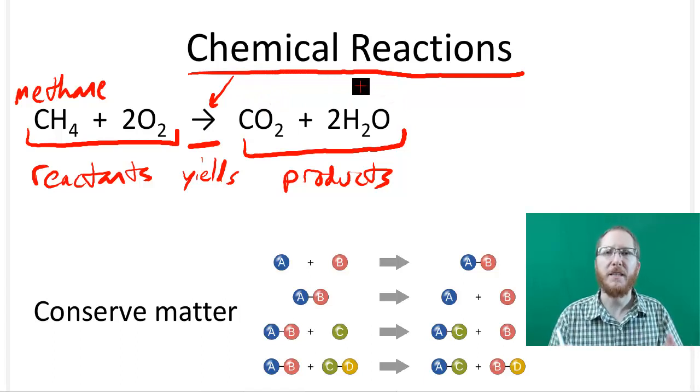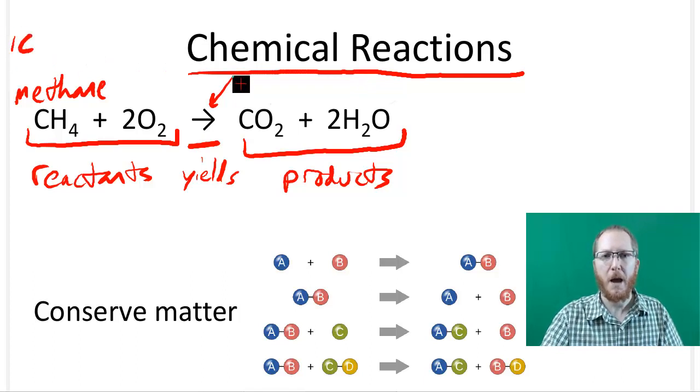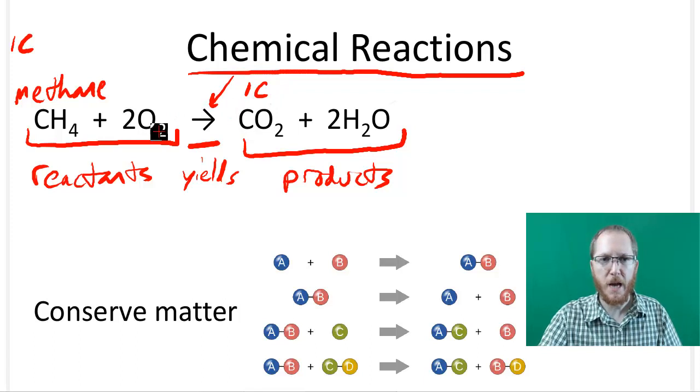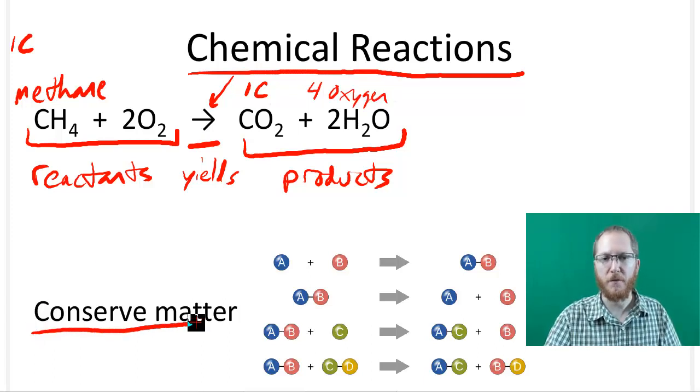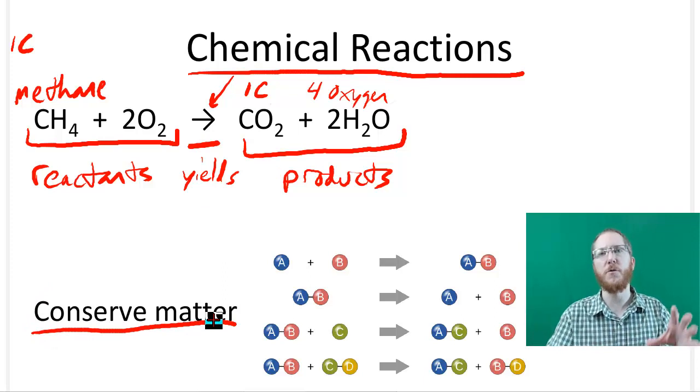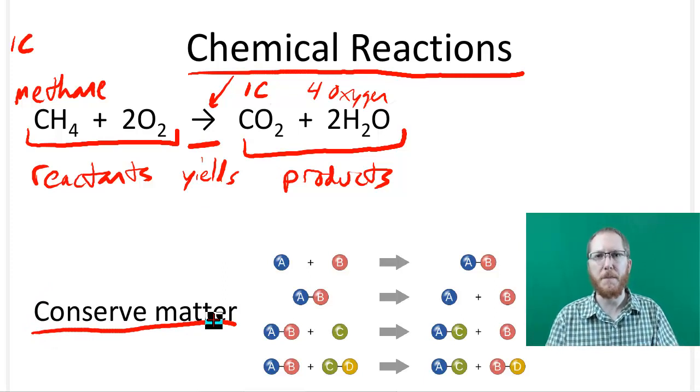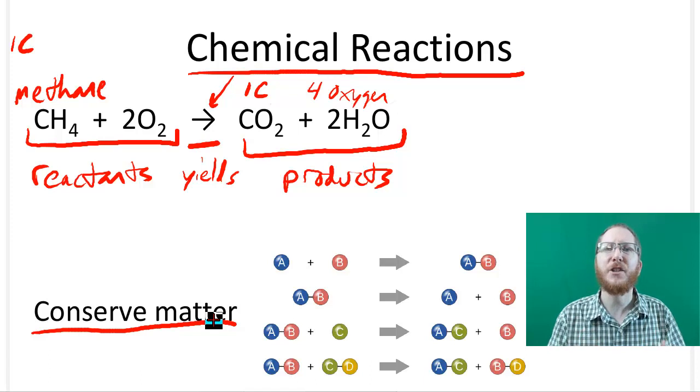And so this process isn't going to actually make any molecules. We still have one carbon to start with over here, and we still have one carbon when we're done. We still have two times two or four oxygen atoms when we start, and we still have two plus two, so we still have four oxygen atoms when we're done. So overall, we're going to conserve the matter we have. We're just kind of shifting the chairs around, if you will, and repartnering some people that might be in those chairs. But we're not actually making or losing anything.